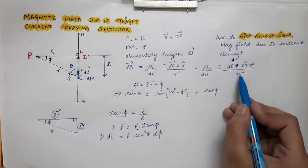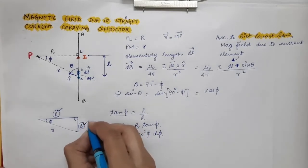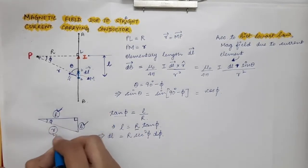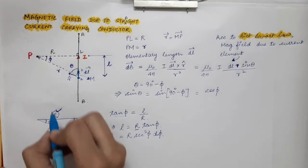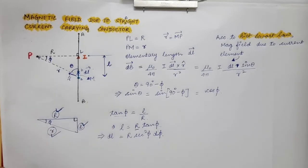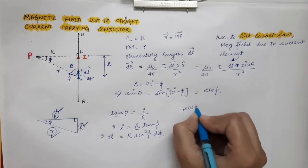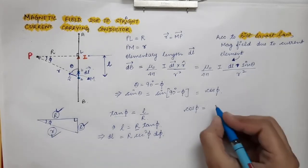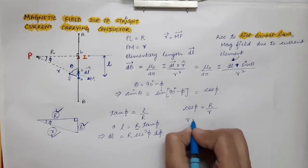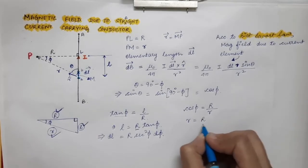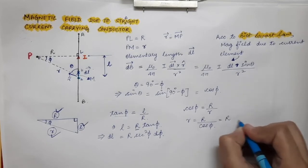Now we need to find small r in terms of phi. Again using this right-angle triangle, with base capital R and hypotenuse small r: cos φ = R / r, so r = R / cos φ, which can be written as R · sec φ. So we have found small r in terms of phi.